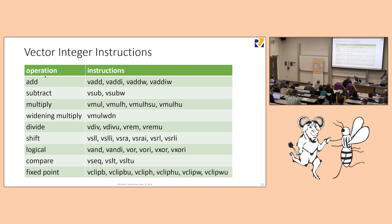Vector integer instructions mirror the RISC-V scalar ISA: add, add-immediate, addw (32-bit add in a 64-bit world), sub, mul, div. Widening multiply takes half the register width plus one bit, multiplies, and produces a double-width result. Clip instructions are for fixed-point. Most are just the scalar instruction with a V prefix.